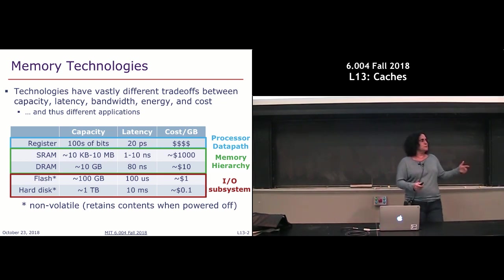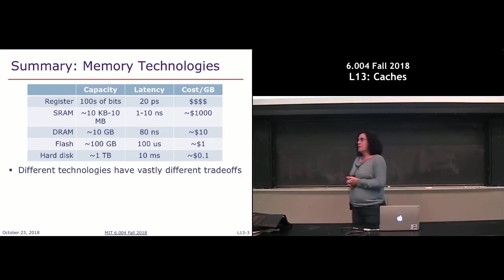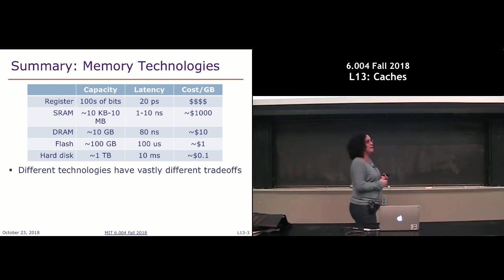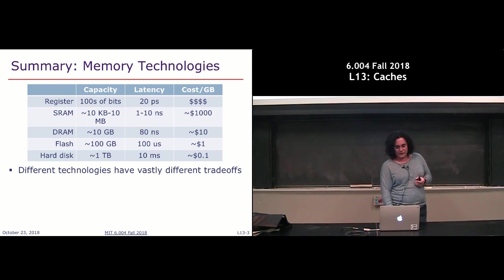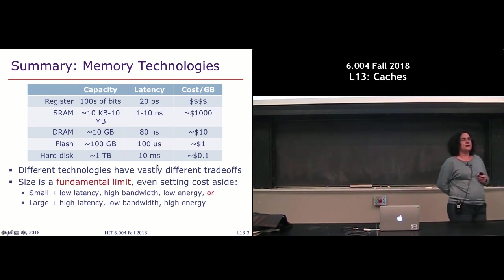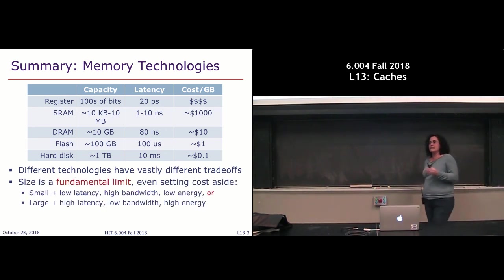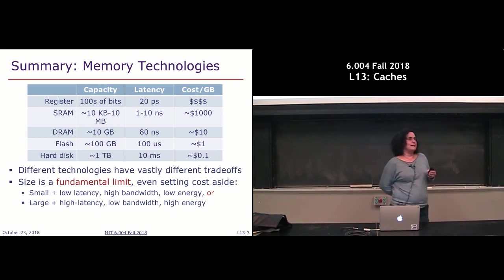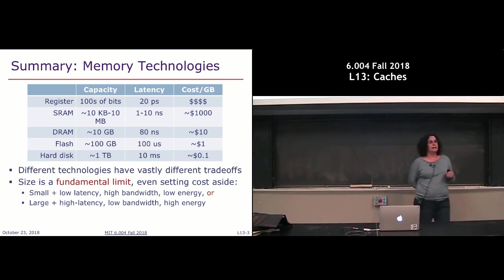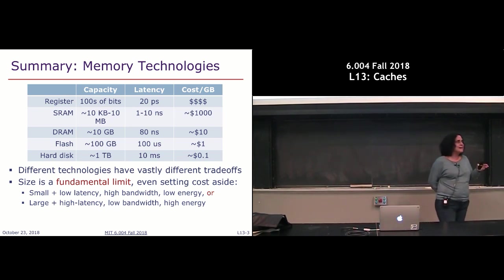In addition to SRAMs and DRAMs, we also have what's called non-volatile memory. Non-volatile means that even if I shut the power off, it's still going to retain the values stored in memory. This refers to our flash drives and hard disks, which are used to store things we don't want to lose but aren't accessing very frequently. As we walk down the table, to get more capacity we have to take a hit on cost — there's a fundamental limit: large capacity means slow, and fast means only a small amount of capacity.